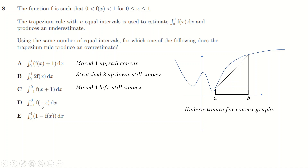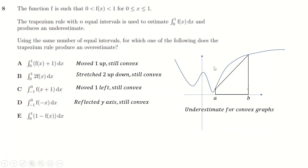The fourth option reflects the graph in the y-axis — still convex, still an underestimate. By deduction it must be the fifth option. They've flipped the graph in the x-axis and then shifted it up, which makes it concave — so that one gives an overestimate, not an underestimate.